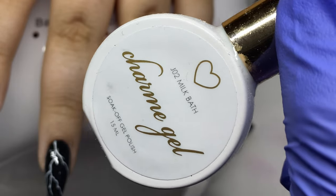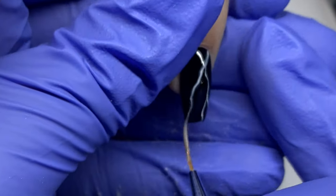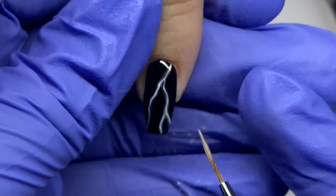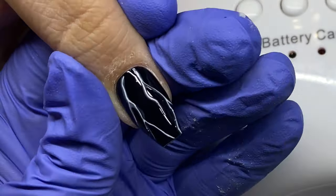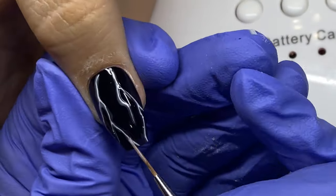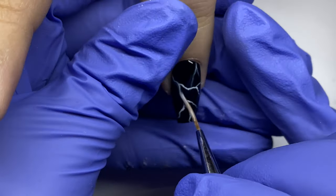Now we're going to use Milk Bath, and this is from Daily Charme. You can use discount code Tabitha and the number 10. Information will be in the description bar. Once we cured that initial bright white, we're taking this Milk Bath color and I'm using a medium striper brush.